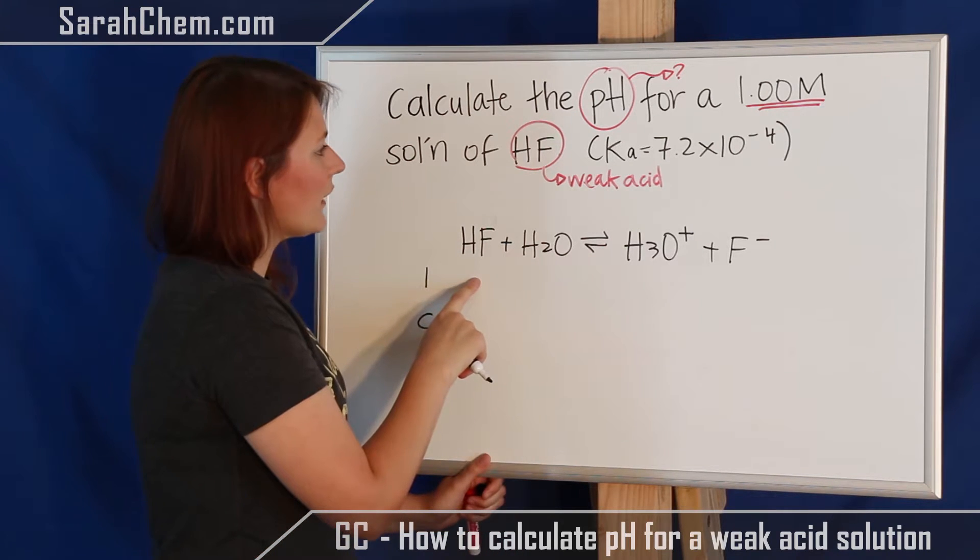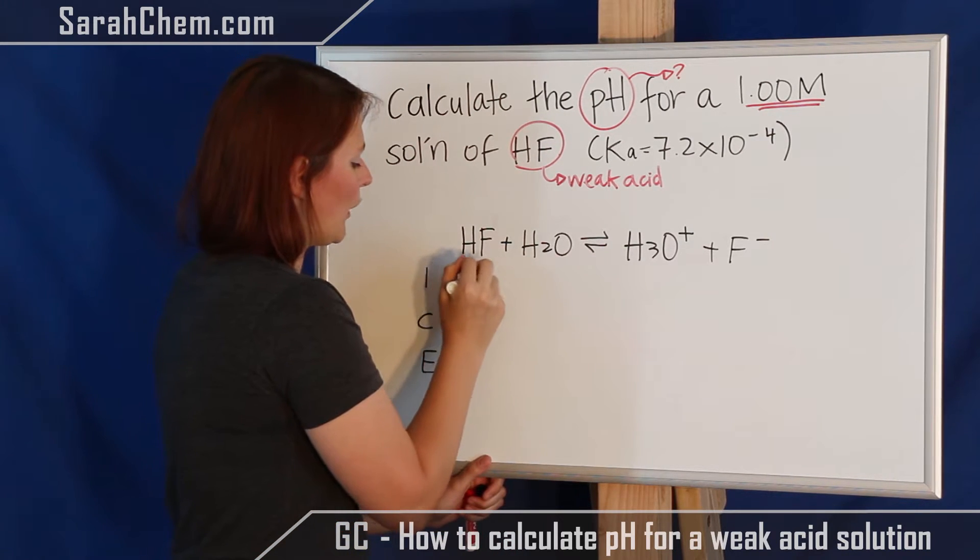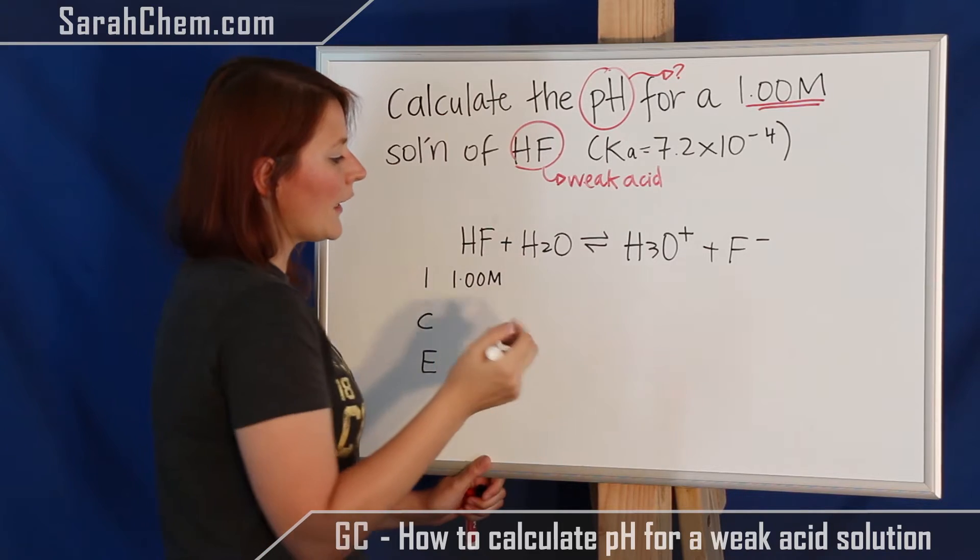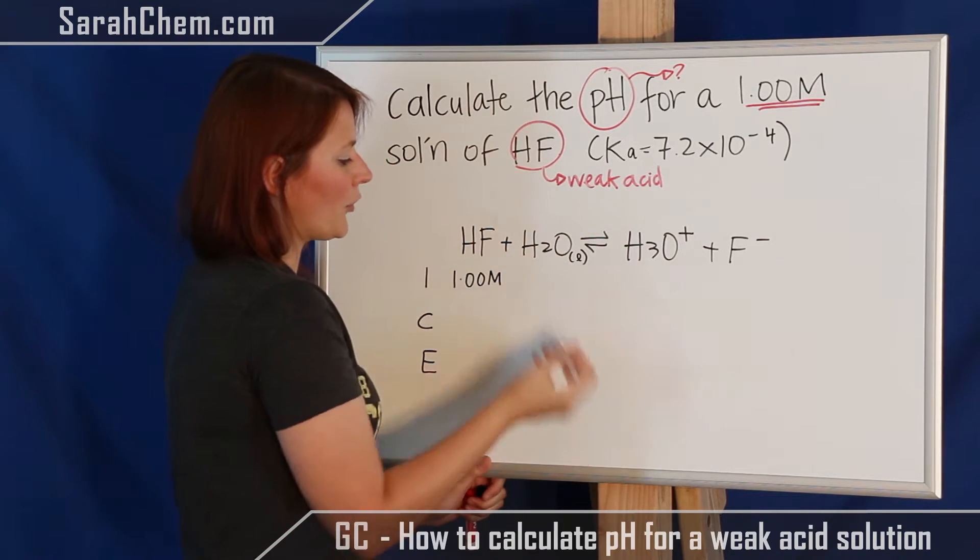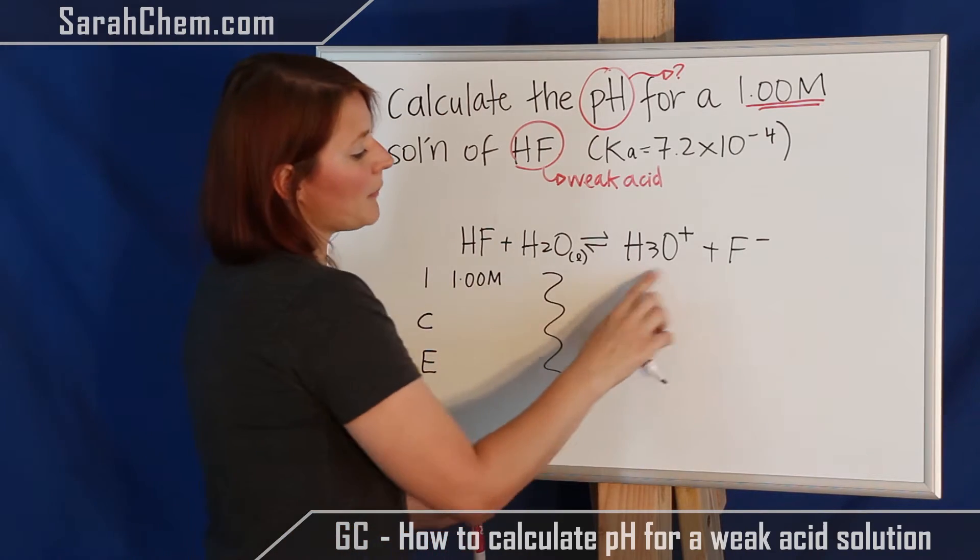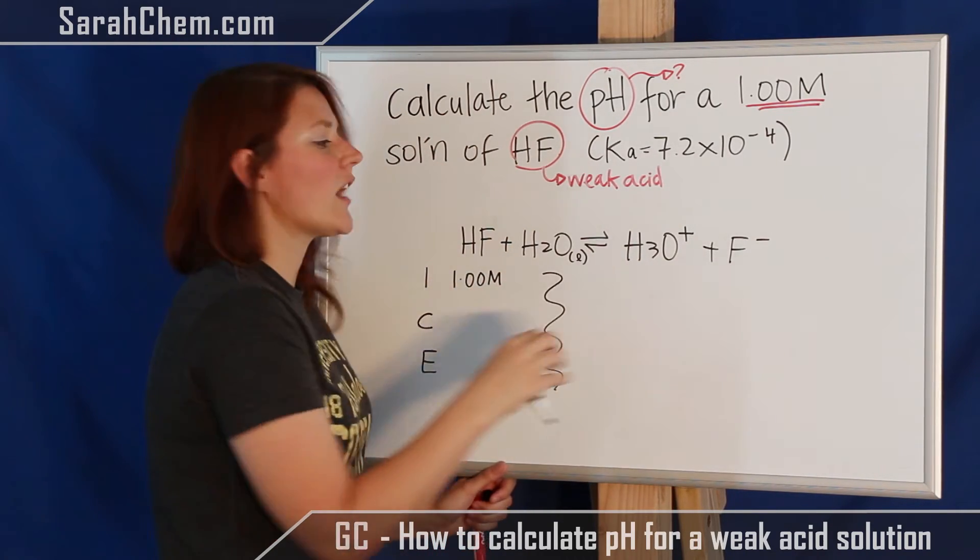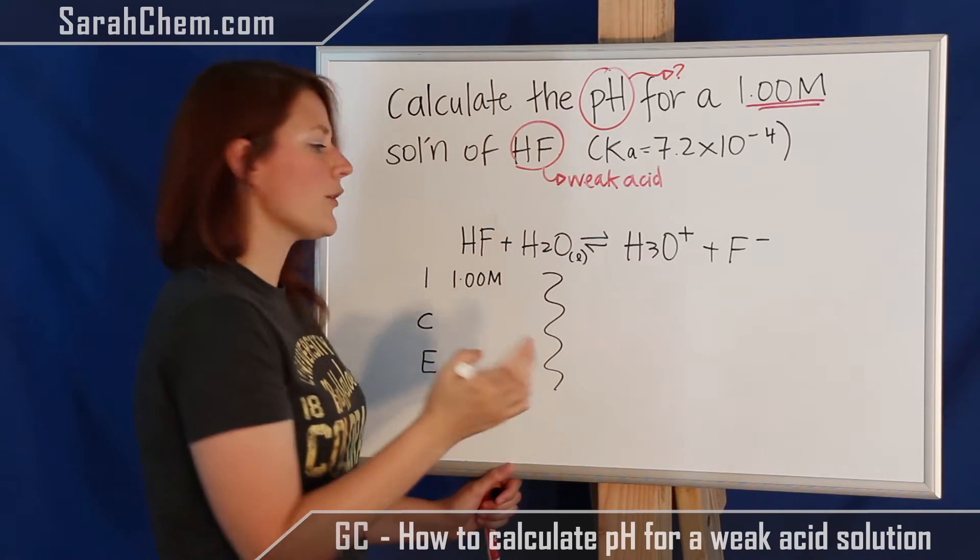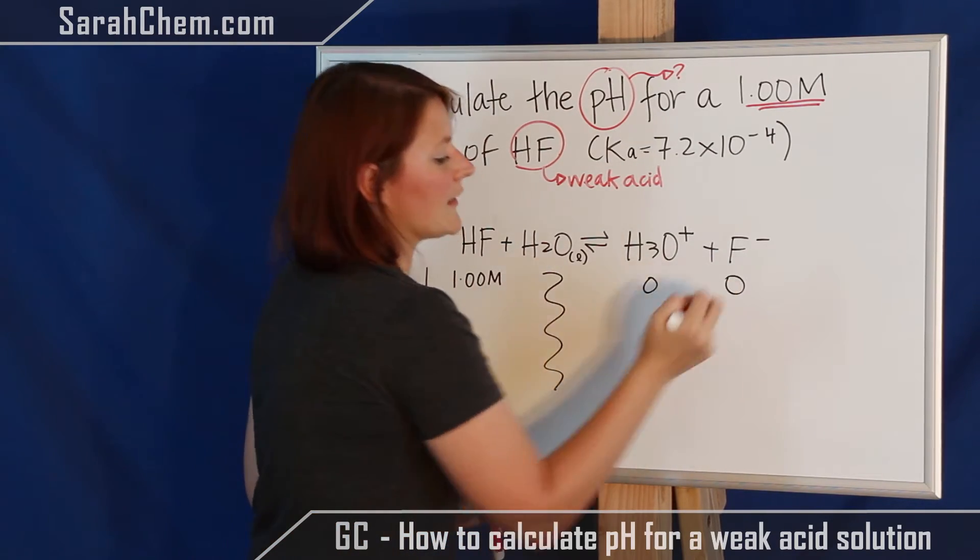So over here we know the initial, it's given, it's 1.00 M. Now remember the state of matter over here for water is a liquid, and liquids do not factor into equilibrium calculations. And then because we know when you first put in the HF we don't have a concentration of either of those, so these are going to start out at 0.